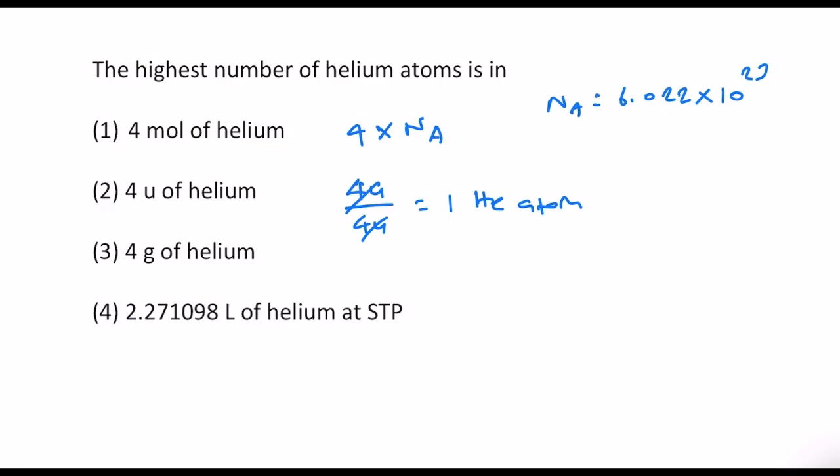And then in option 3, we have 4 gram of helium. We know that number of atoms equals mass divided by molar mass times NA. In this case, we have to use the atomic mass. So atomic mass of helium is 4 gram per mole, given mass is 4 gram - gram cancels - times NA. So this will be simply NA.